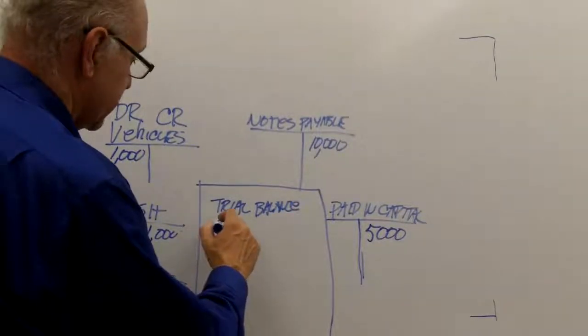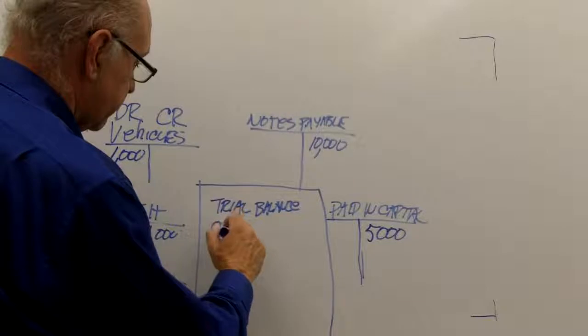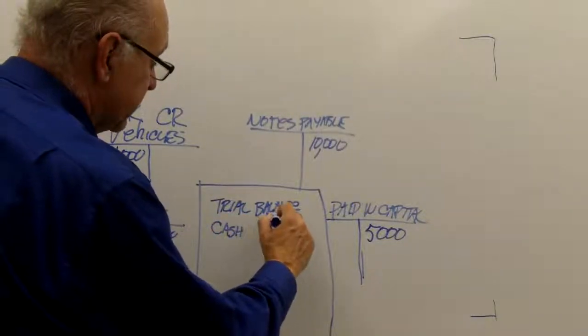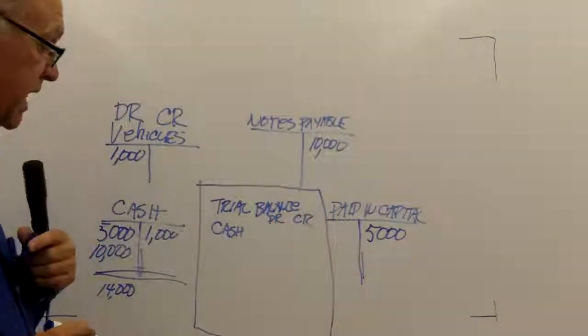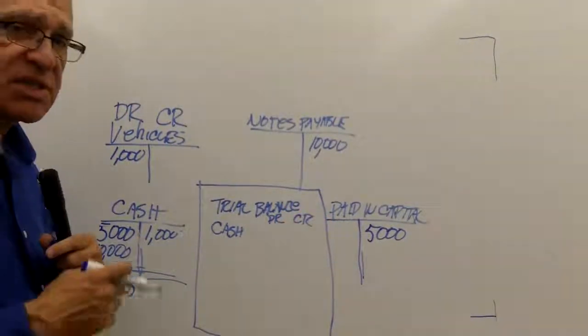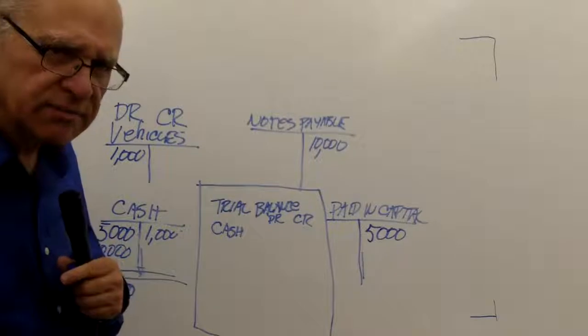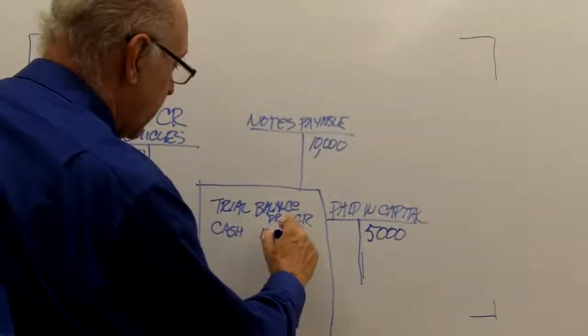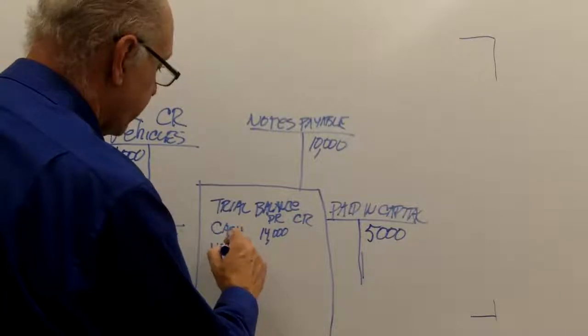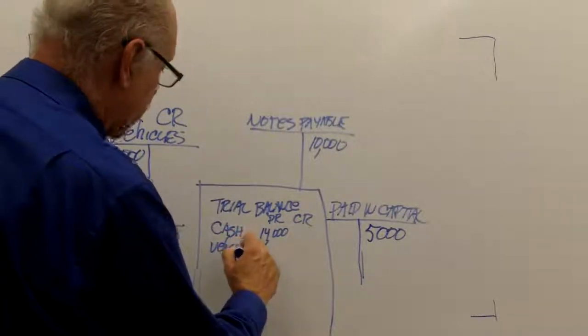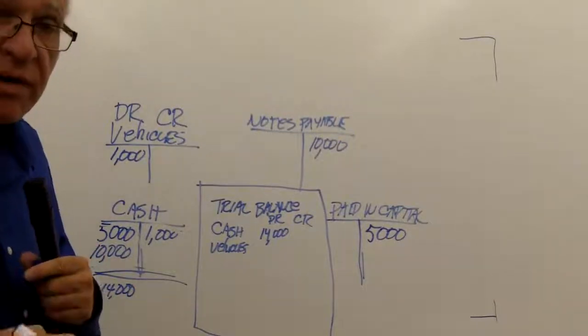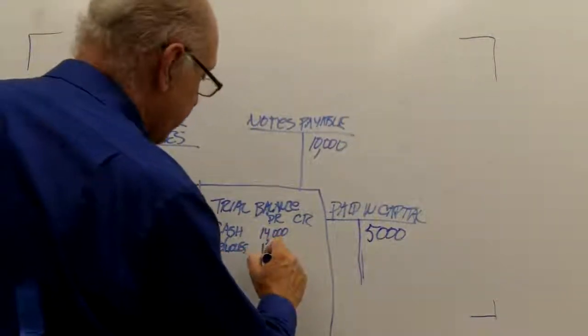So I'll start here with cash. Cash. And I have a debit side and a credit side. So my balance in cash is $14,000. Is that a debit balance or a credit balance? It's a debit balance. I have vehicles. I have a $1,000 vehicle. Is that a debit balance or a credit balance? It's a debit balance.